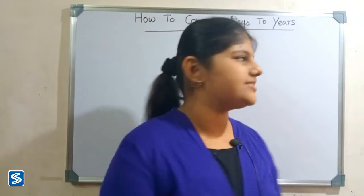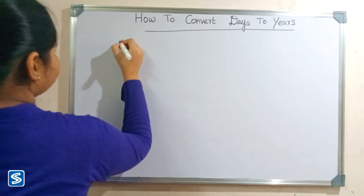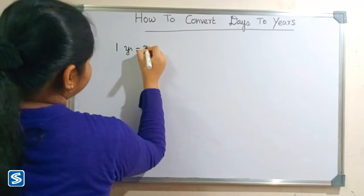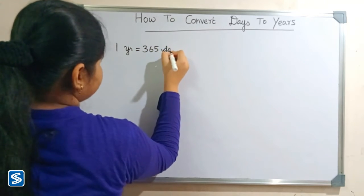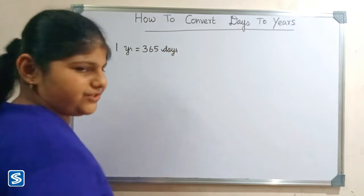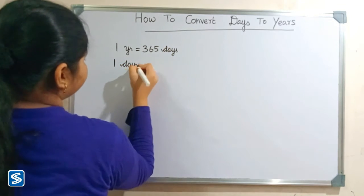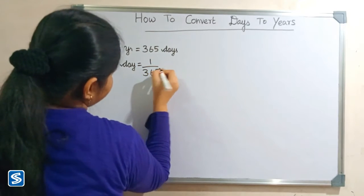Hi friends, welcome to my channel. In this video I'm going to teach how to convert days to years. We already know that one year is equal to 365 days, so one day is equal to 1 by 365 years.